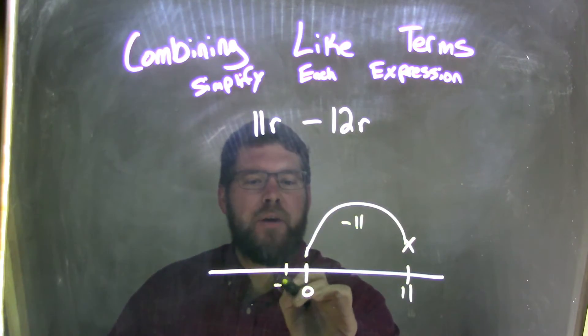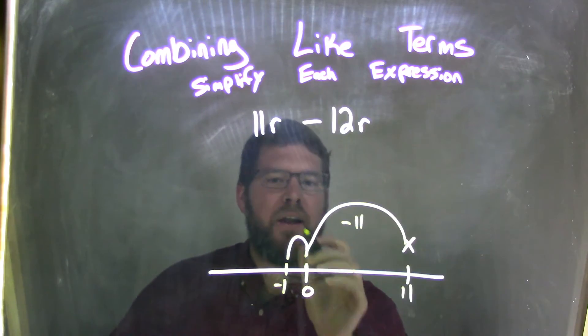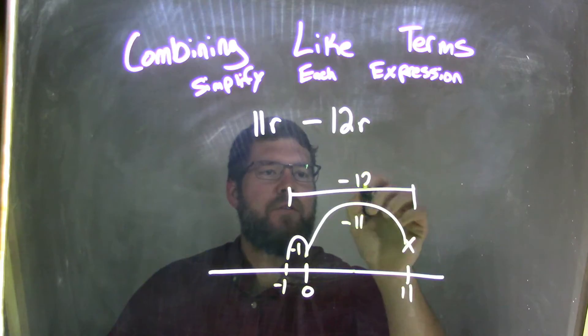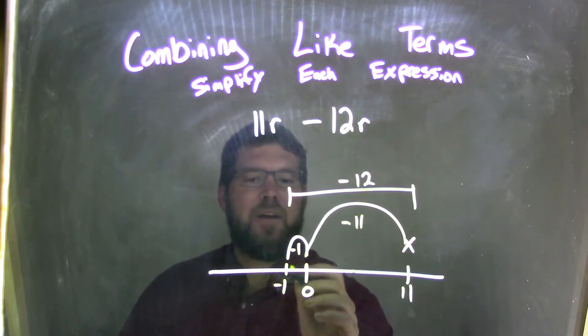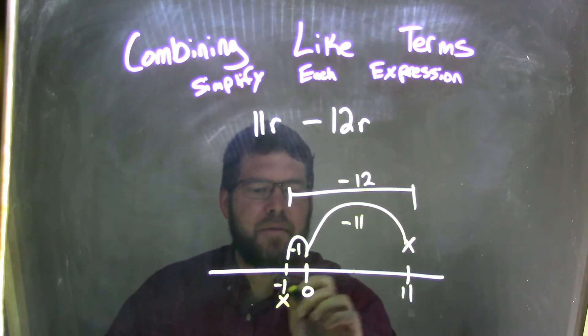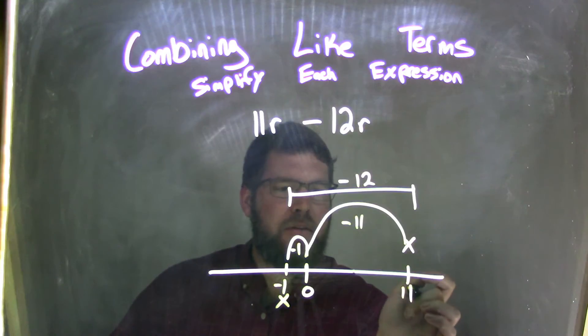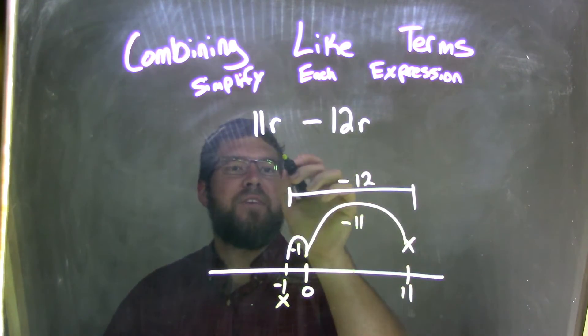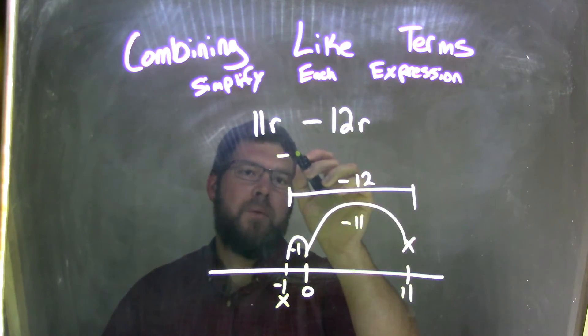So, at negative 1, one more jump here. And negative 1, I have minus 1 with a total of minus 12, okay? So, negative 1 is my end point down here. So, if we're 11, subtracting 12, it got us to negative 1. And so, our final answer is negative 1r, but we only write just r, which is negative r.